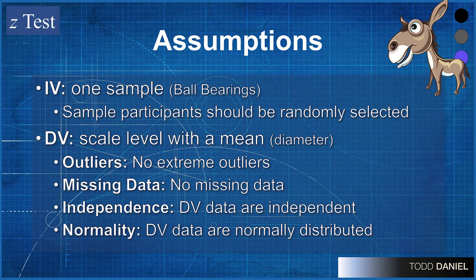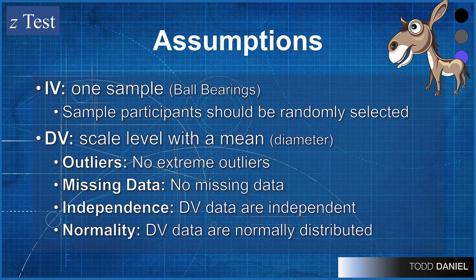Let's review the assumptions for a one-sample z-test. The independent variable should be a single sample, and that is what we have — they are ball bearings. This is a categorical variable, where the variable simply is ball bearings. We were told in the word problem that the ball bearings have been randomly selected. The dependent variable would be something that we measure — in this case, the diameter of the ball bearings.